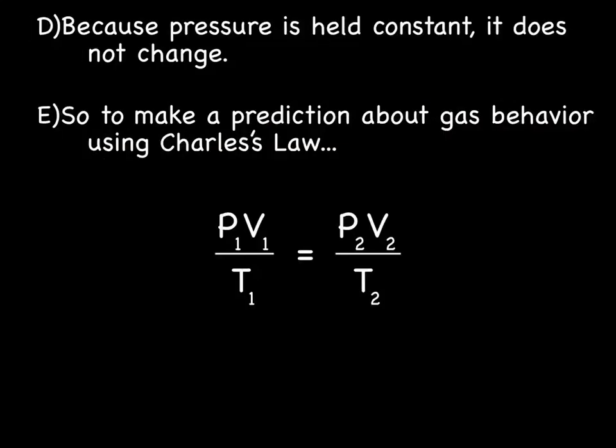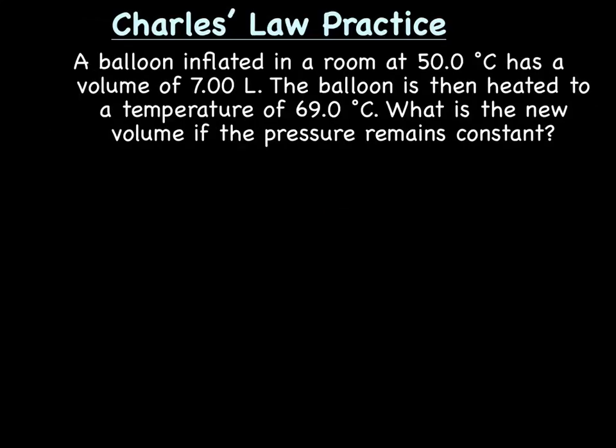Remember, we're holding pressure constant. Charles is only interested in volume and temperature. So when making a prediction about gas behavior using Charles' Law, we still use the formula P1V1 over T1 equals P2V2 over T2, but we get to ignore pressure. We just use V1 over T1 equals V2 over T2. Now it's time for a practice problem.